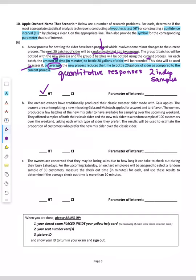And since we have a quantitative response, talking about averages and we have two samples, the parameter of interest then will be the difference in the two population mean times to bottle 20 gallons of cider.